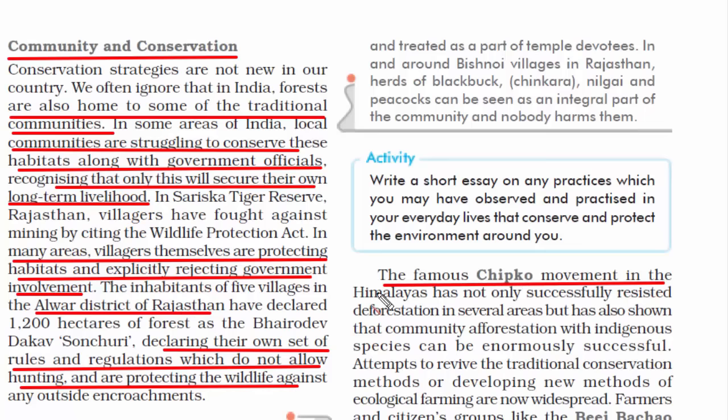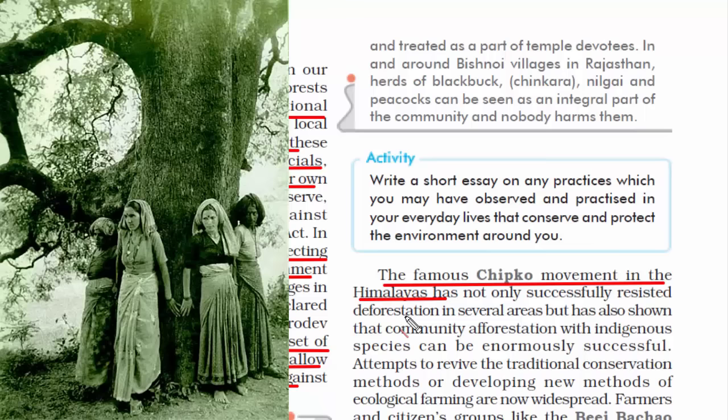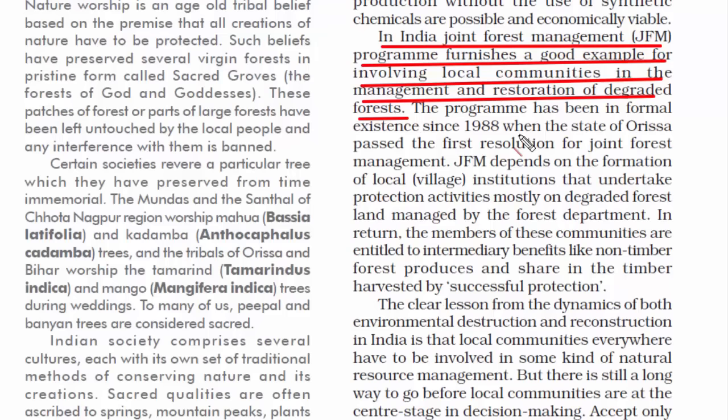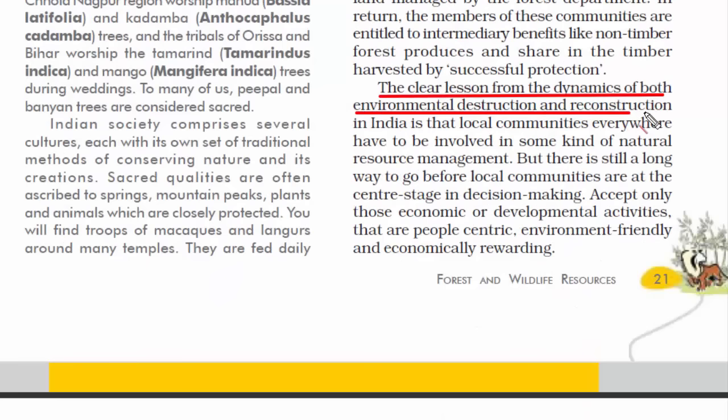The famous Chipko movement in the Himalayas was created to shed light on the destruction of forests. Though not a 100% success, it saw massive community involvement across the country towards environmental protection. Another example is joint forest management, where local communities worked together for the management and restoration of degraded forests — a resolution passed in the state of Odisha. The lesson is that humans are the ultimate beneficiary of biodiversity, and it is our responsibility to preserve and conserve it for future generations.